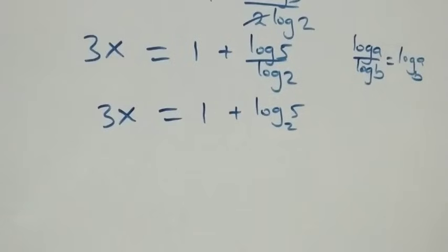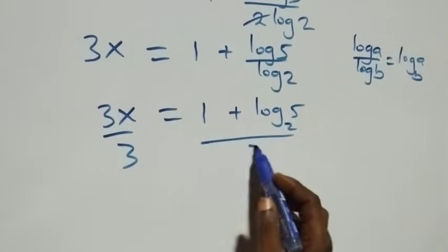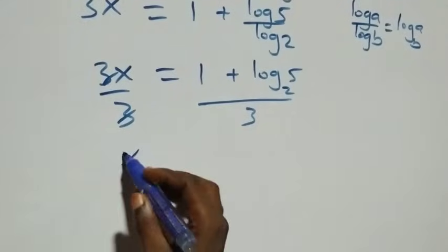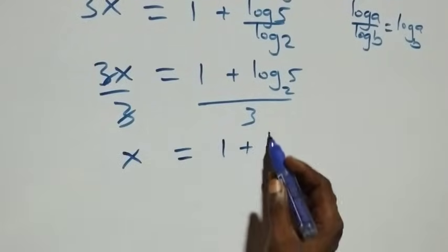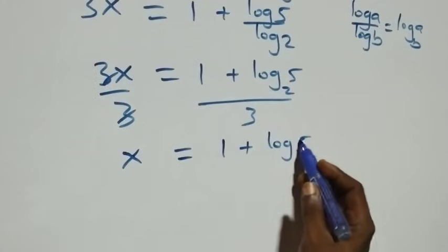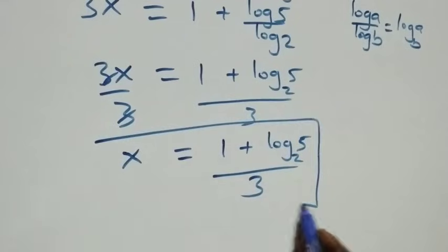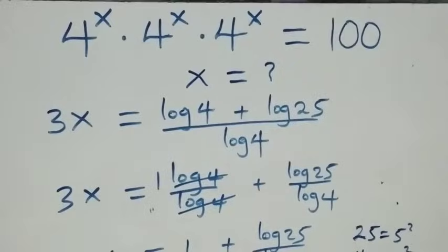The next step: we divide both sides by 3. The 3s cancel on the left, and we are left with x, which equals 1 plus log 5 to base 2, all over 3. So the value of x in this problem is (1 + log₂5) / 3. Now let's check if this satisfies the given equation.